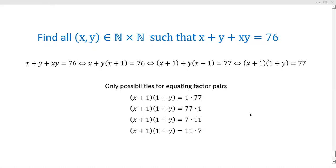Find all ordered pairs (x,y) of natural numbers such that x + y + xy = 76. Notice the expression is not factored, so it will be useful to factor it so we can equate factor pairs.